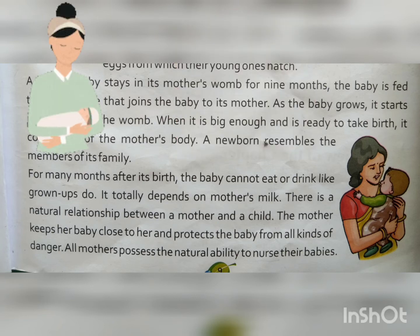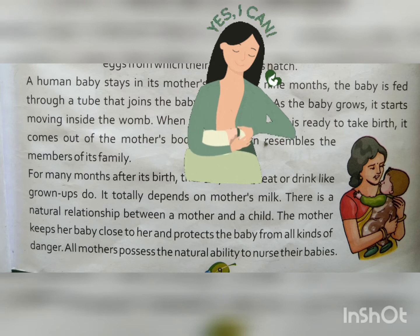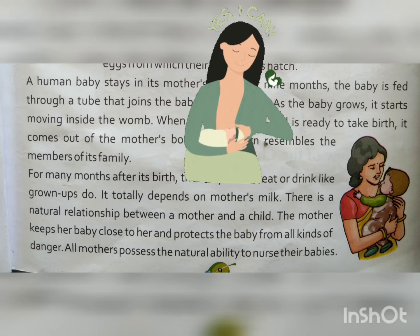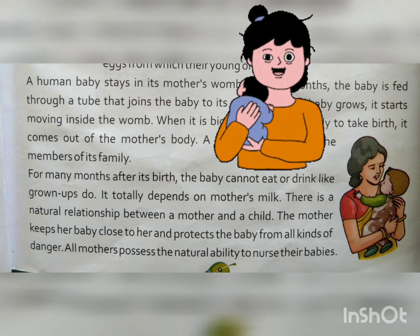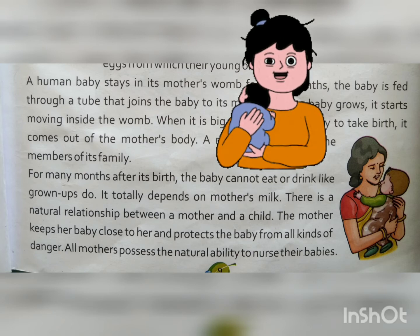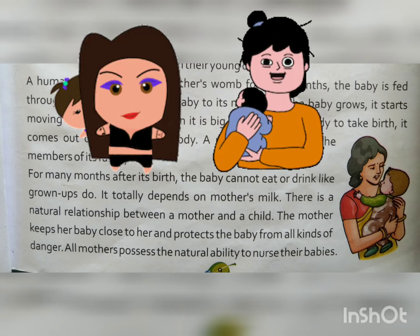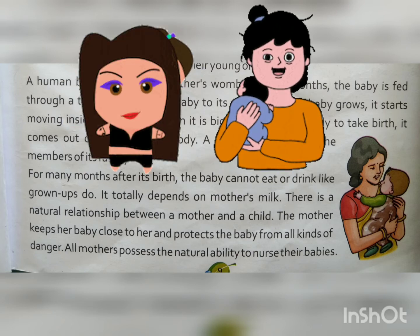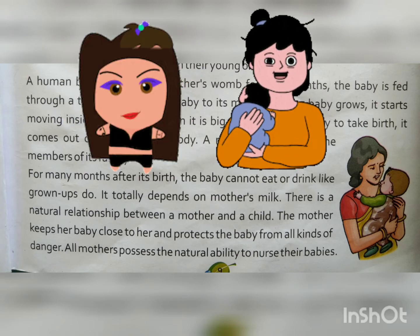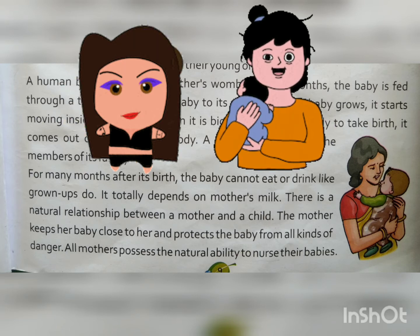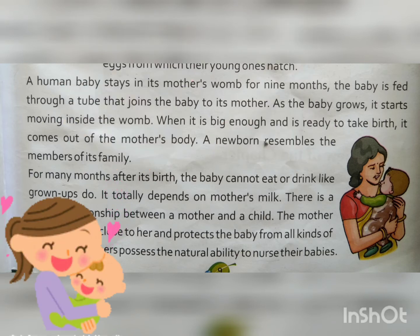There is a natural relationship between a mother and a child. The mother keeps her baby close to her and protects the baby from all kinds of danger. All mothers possess the natural ability to nurse their babies.